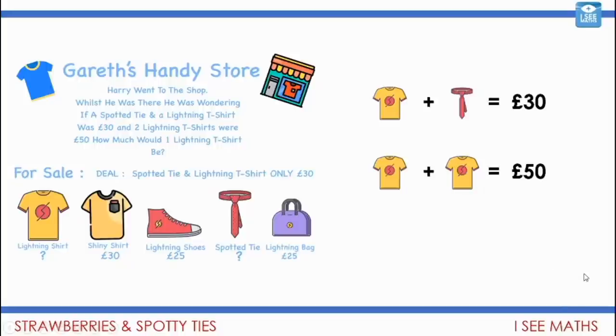Well, what can I work out first? A lightning t-shirt, £25. That spotty tie, it must be £5.